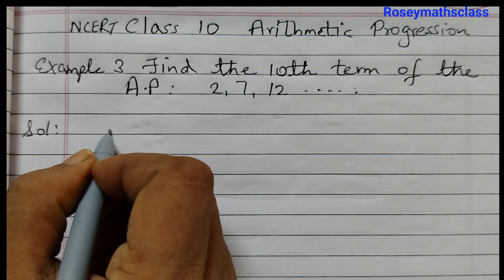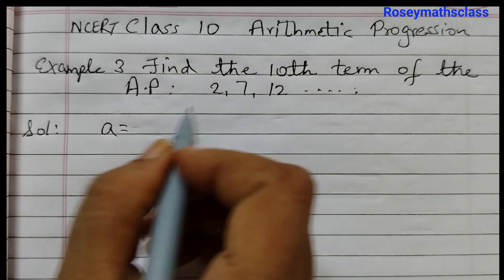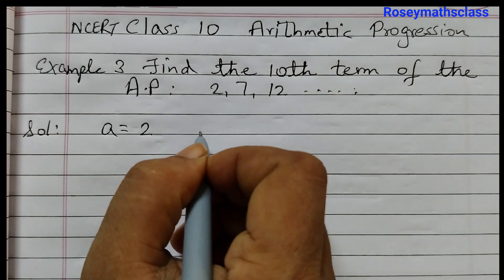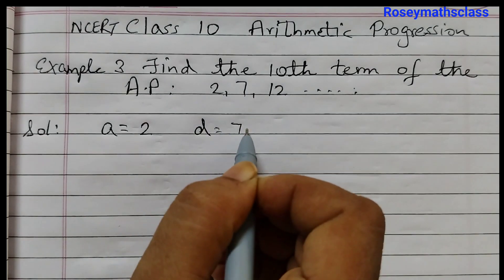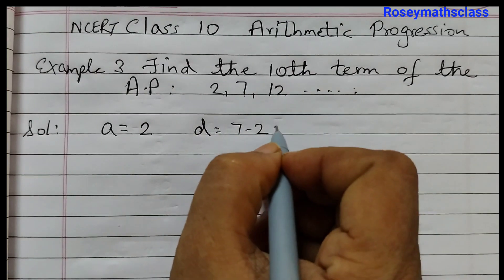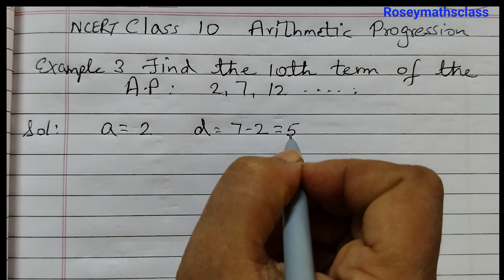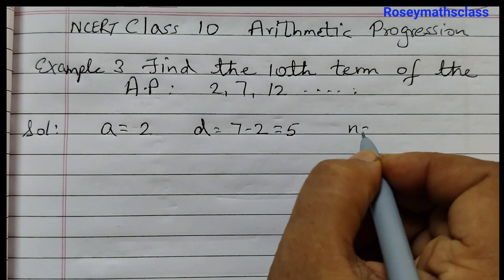So here we can write A, which is the first term, given as 2. The common difference is D. So you can take 7 and 2, that means 7 minus 2 is equal to 5.